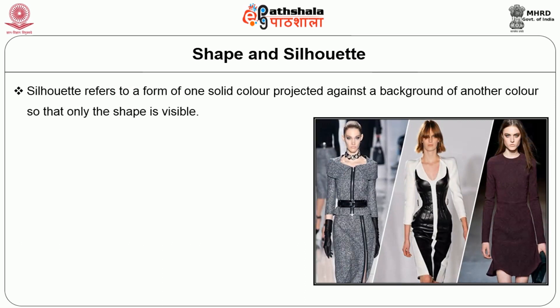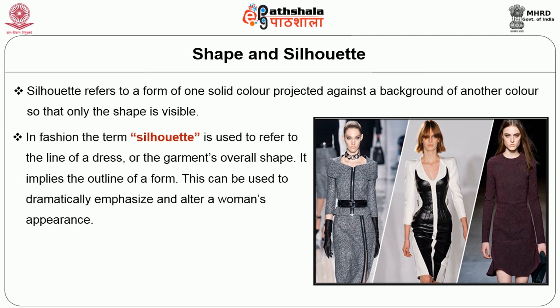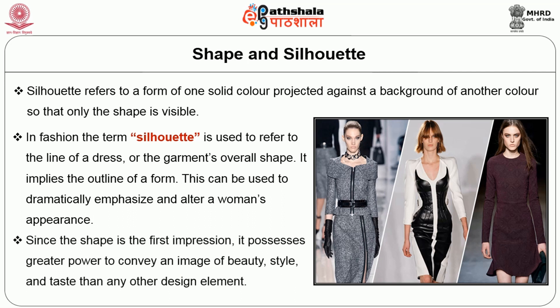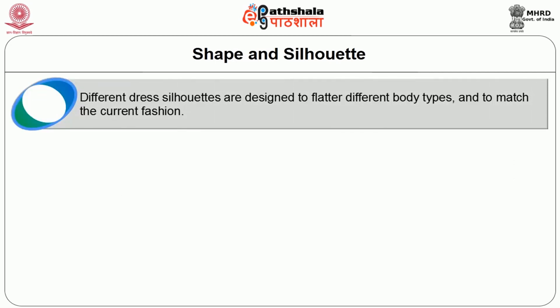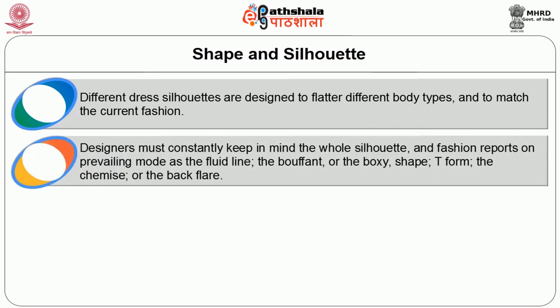Now let us see the second element of design, that is shape and silhouette. Silhouette refers to a form of one solid color projected against a background of another color so that only the shape is visible. In fashion, the term silhouette is used to refer to the line of a dress or the garment's overall shape. It also implies the outline of a form. This can be used to dramatically emphasize and alter a woman's appearance. Since the shape is the first impression, it possesses greater power to convey an image of beauty, style and taste than any other design element.